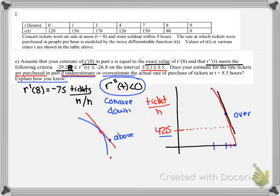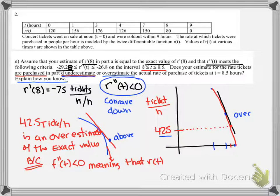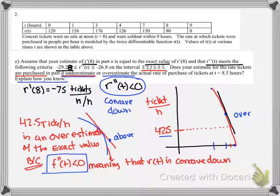So we can say 42.5 tickets per hour is an overestimate of the exact value because our double prime of T is less than 0. And you could expand if you wanted and say, meaning that R of T is concave down. But for sure, you'd need to say this right here. You'd need to use that second derivative being less than 0.